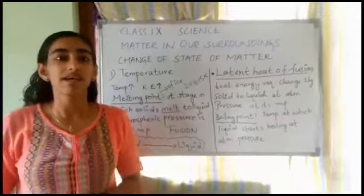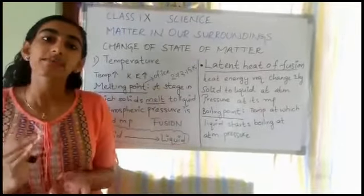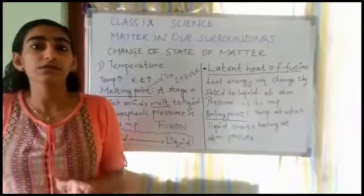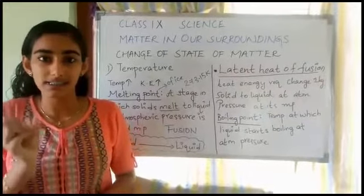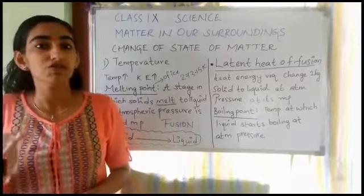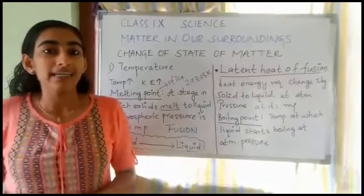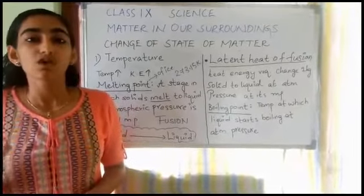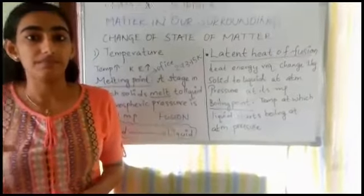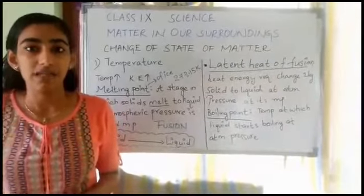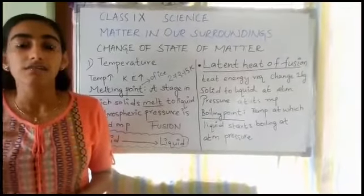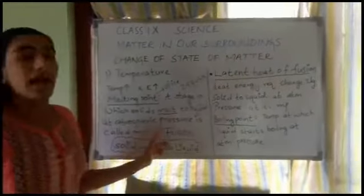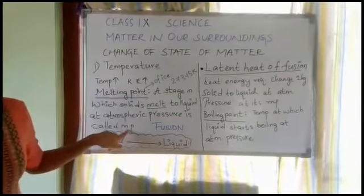We have an experiment: take a beaker and fill it half with ice, take a laboratory thermometer and put it in such a way that the bulb of the thermometer touches the ice, then heat it up slowly. You will find that the solid starts melting and changes into its liquid state. What you have to observe is the temperature at which the solid starts melting — at this stage the solid will melt and form liquid.